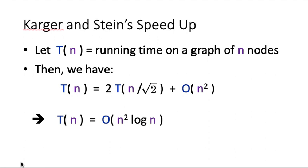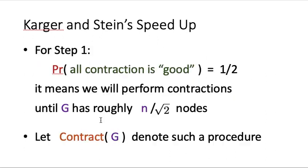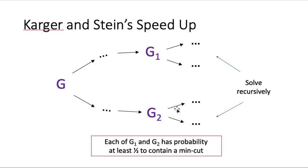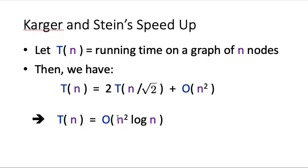To analyze the running time, let T(n) be the running time on a graph of n nodes. Using the recursion, T(n) equals 2 times T(n over square root 2) — two subproblems of size n over square root 2 — plus O(n squared) for the contraction step. By solving this recurrence using the master theorem, we get T(n) equals O(n squared log n). Compared to a single run of contraction costing O(n squared), we pay a factor of log n more in running time.